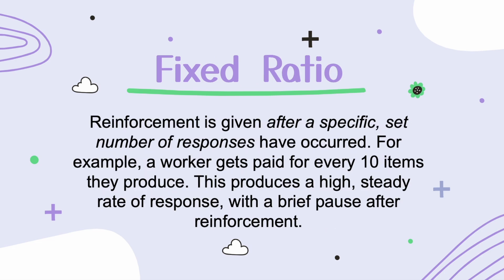Next, let's talk about a fixed ratio. Reinforcement is given after a specific set number of responses have occurred. For example, a worker gets paid for every 10 items they produce. This produces a high steady rate of response with a brief pause after the reinforcement.